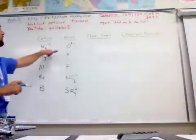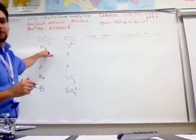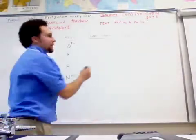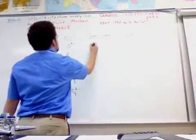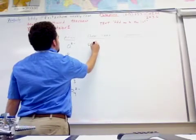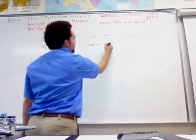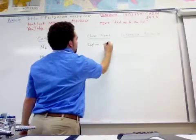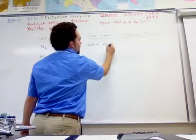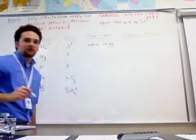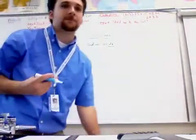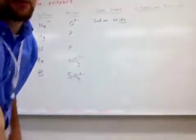So now we get to the part where we want to name it, and the way you do that is easy. You just take the name of the cation, which is sodium, and then oxygen is the name of the anion, but we drop the ending and add -ide. So sodium oxide is the name. Let me move it a little bit closer — that might help out a bit.